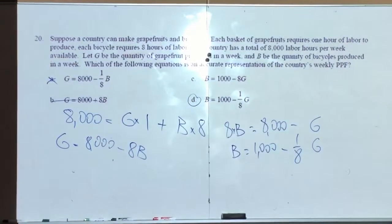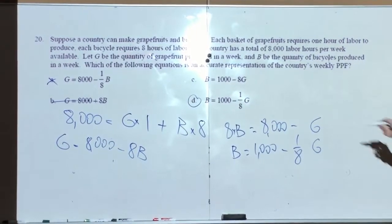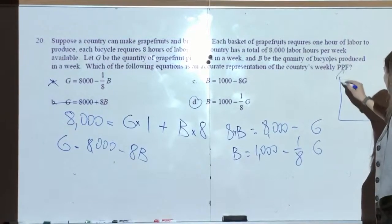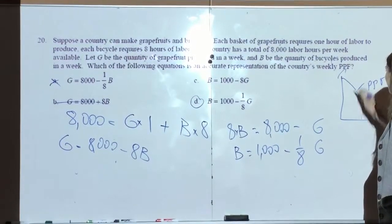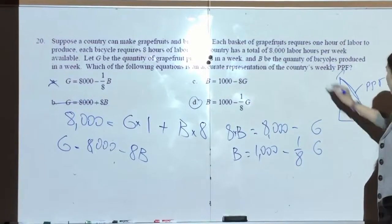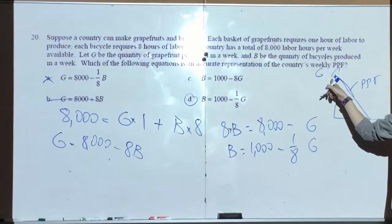Or, if you want to think of this as the graph, this is the BPF. It would actually be a straight line. So, if I put G here and B there, this would be the intercept.